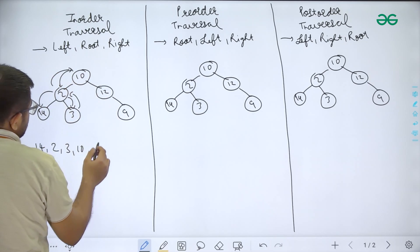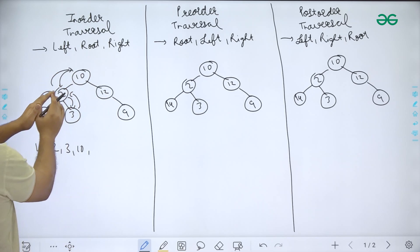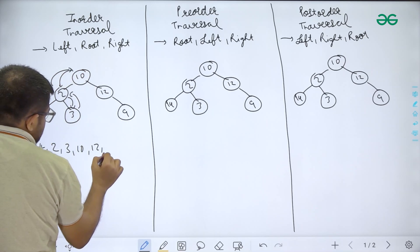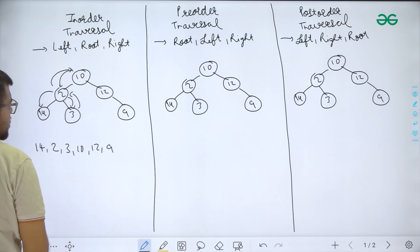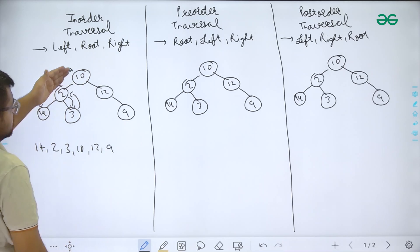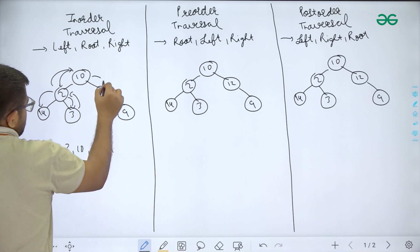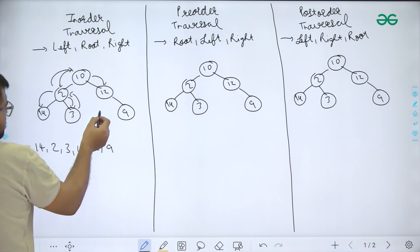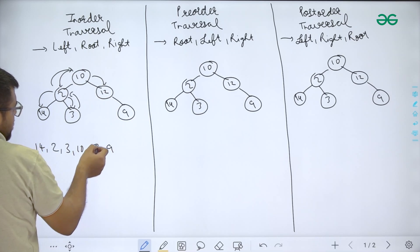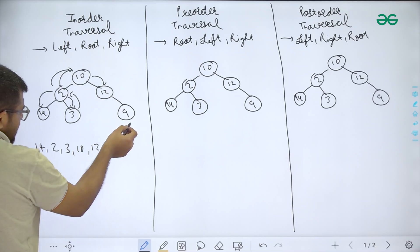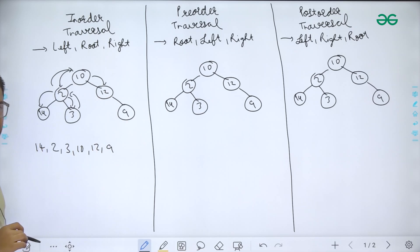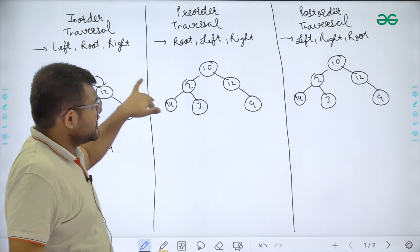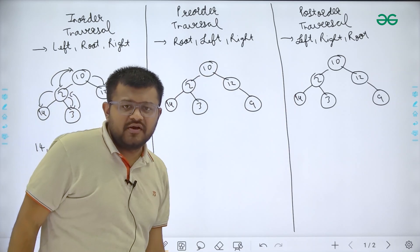Then we go into 10's right subtree. The right subtree contains 12 and 9. When we go to 12, first the left subtree is traversed — there is no left subtree — so 12 is traversed as root, then 9 is traversed as the right child. So the full in-order output is: 14, 2, 3, 10, 12, 9. Similarly, pre-order is root-left-right and post-order is left-right-root.